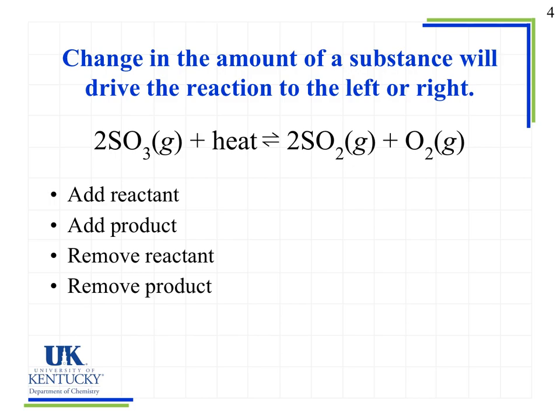Let's look at a change in the amount of substance and whether it will drive the reaction to the left or the right — we also call this shifting the reaction. Remember, when we looked at the K value, that equilibrium constant, it was under those conditions for that particular reaction, and we said whether there's more products or more reactants. When we have a disturbance to the system, the reaction is going to respond, resulting in some change in the amounts of products or reactants.